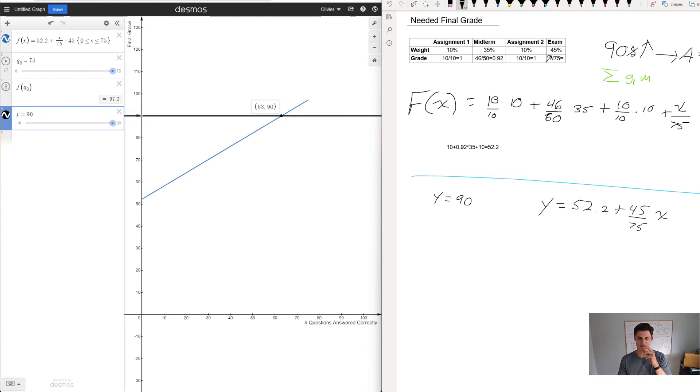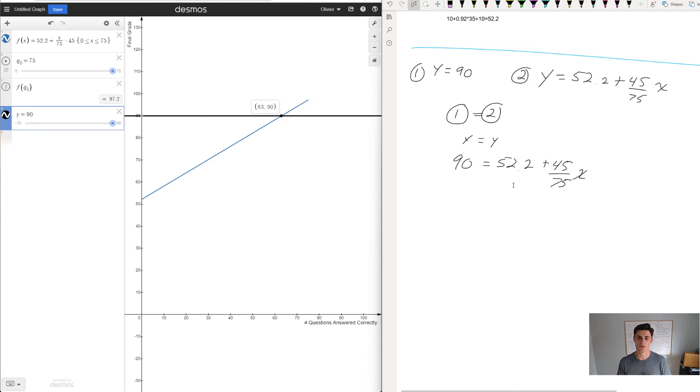We can just solve because we have one and two. We do y equals y, so 90 equals 52.2 plus 45 over 75 x. I'm trying to solve for x so I do minus 52.2 on both sides. 90 minus 52.2 equals 37.8. Simplifying 45 over 75 gives us 3 over 5, so 37.8 equals 3/5 x.